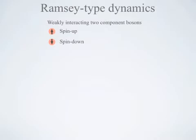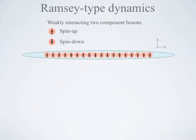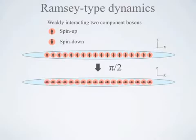Now at the very beginning, we prepare all the particles to spin-up. Then, just as a typical Ramsey sequence, we apply pi-over-two pulses to rotate the spins into x-direction.